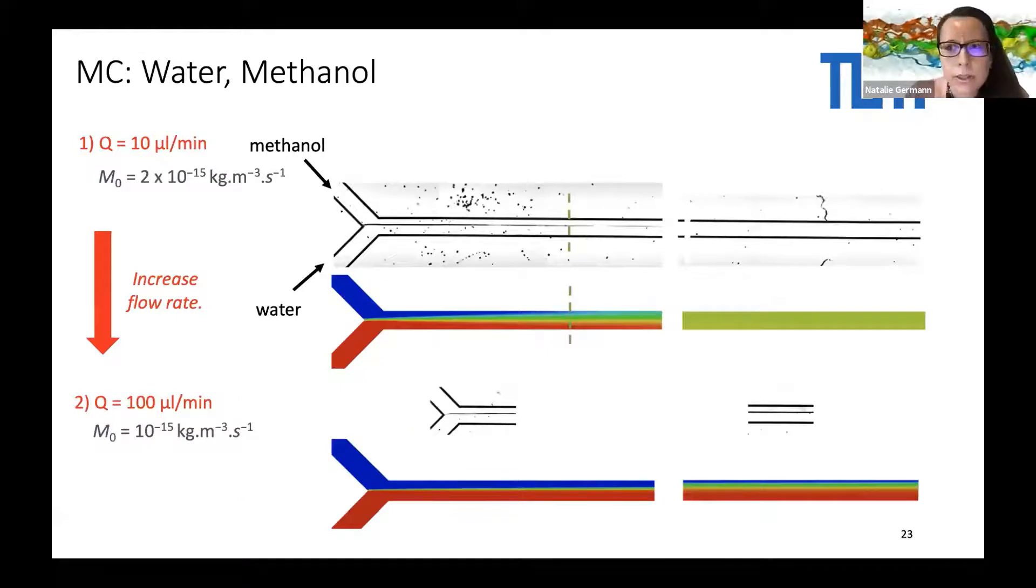Now let's go to the miscible case. We go to the other extreme from nearly immiscible to fully miscible. We have a binary system of water and methanol, and these components mix very well. We start with a relatively low flow rate, and we see the mixing nicely occurring in the channel. This is also in accordance with the experimental data. As we would expect, if we increase the flow rate, the mixing takes longer. So we need higher distance to get the mixing done.